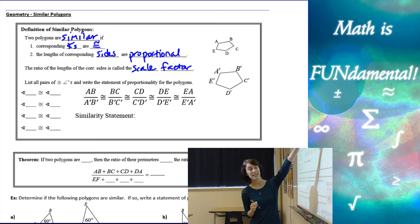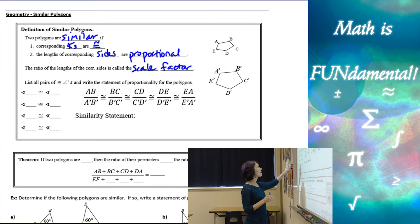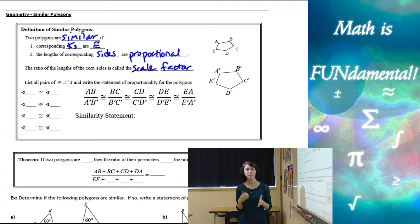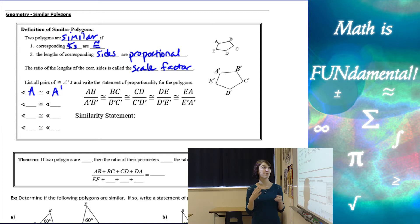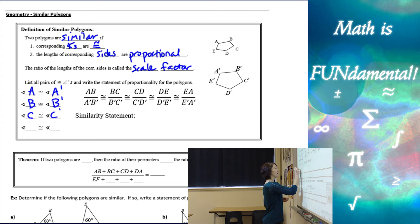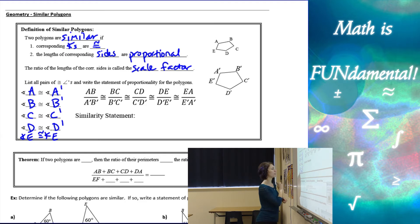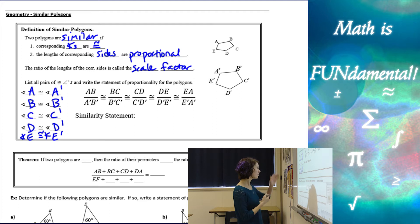Let's look at these two figures. We have ABCDE and A'B'C'D'E'. We want to list all the pairs of congruent angles if those two are similar. Angle A is congruent to A', and we go around the shape — B to B', C to C', D to D', and E to E'.